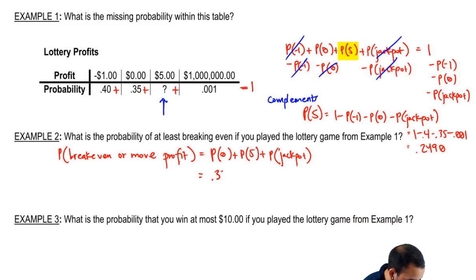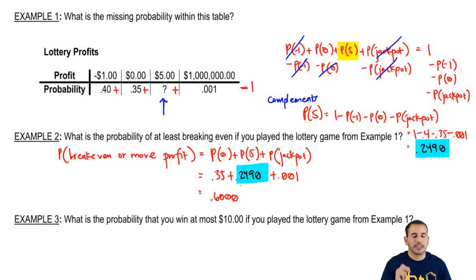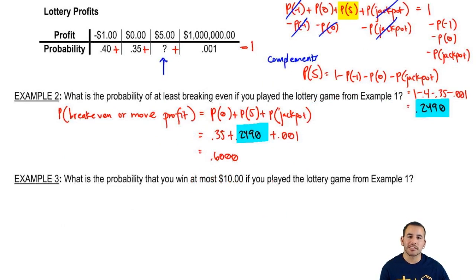So equals, probability of zero was 0.35. Probability of five was 2490, we just found it over here. So this one we got from example one. Plus, what's the probability of getting a jackpot? 0.001. So what do we end up getting? We end up with 0.6000. And the reason why I use four decimal places is because that's just traditionally, a lot of tables use four decimal places and things like that. So I just stick to four decimal places for probabilities. Cool. So breakeven or any more with 60%. It's a pretty good lottery game. So there's a 60% chance that you're going to not lose any money or win something. And what are the possibilities? We have five dollars and a million dollars. So that's a lot of money that we could win.